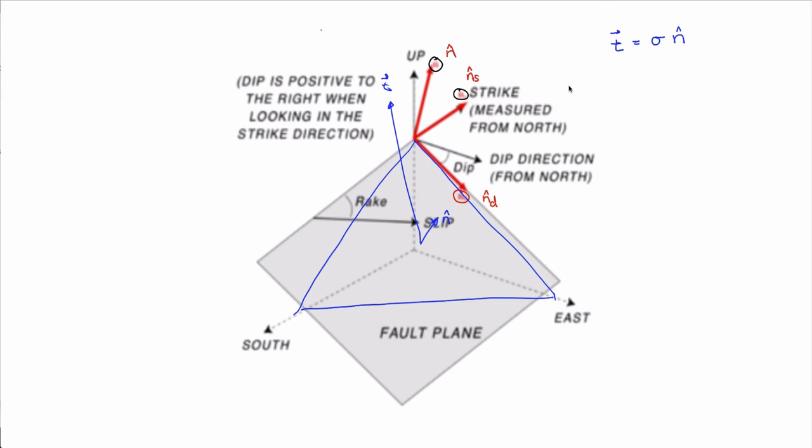The traction is a stress vector — it has units of force per unit area over a differential area, because stress is at a point, so it's an infinitely small thing. If you're given a finite area and a stress and a traction, you can multiply by that area to get the force — for example, to do a force balance.